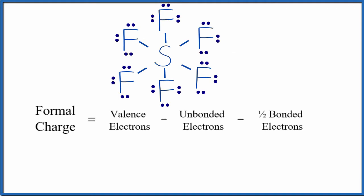and each of the fluorine atoms has an octet, but you'll notice that sulfur in the center has six bonds, so it has 12 valence electrons around it.